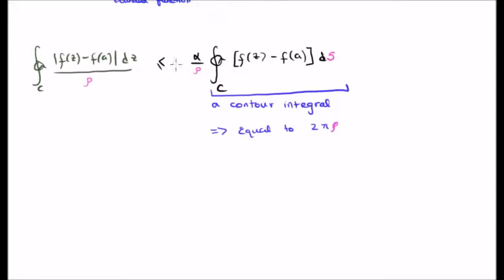This means we can rewrite this using an inequality. So we have alpha over rho and we're integrating it ds where I'm using ds instead of dz and we use the differential arc length formula which I discussed in the previous video.